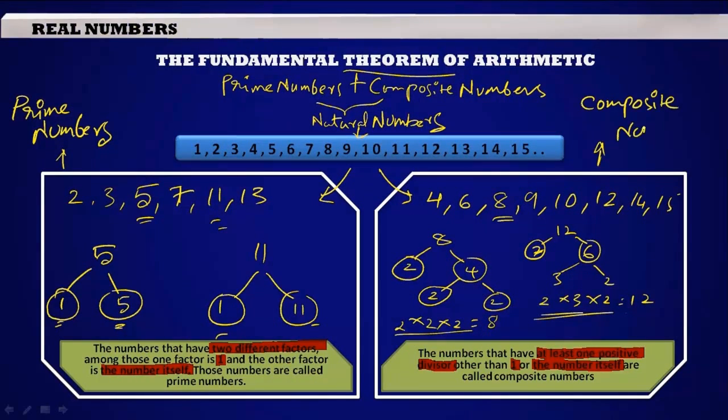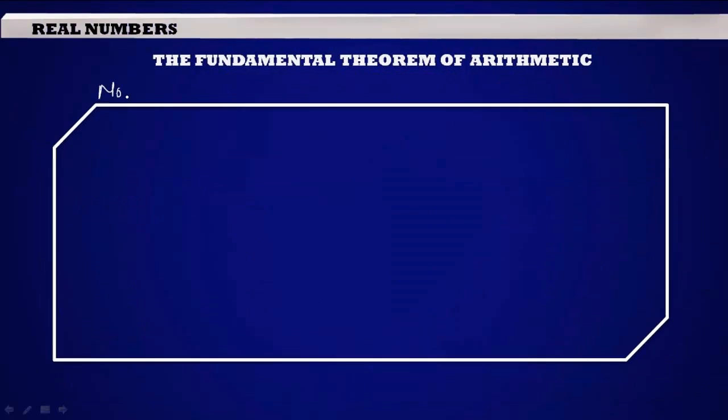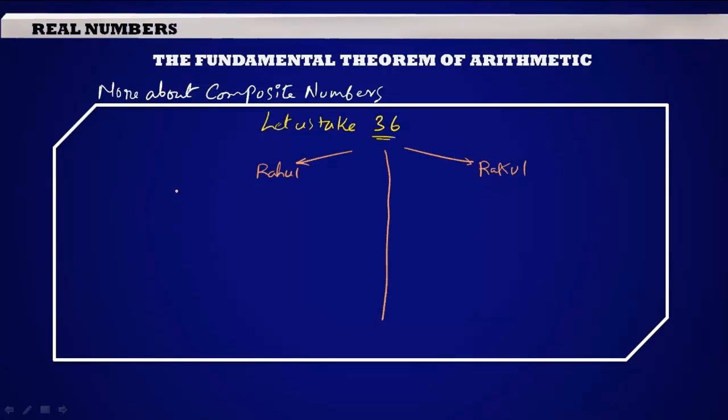The number 1 is neither prime nor composite. Now we are going to make some more interesting observations about composite numbers. Let us take an example: a composite number 36 is given to two students named Rahul and Rakul, and they are asked to find the factors of 36.